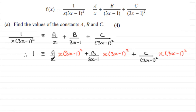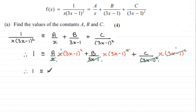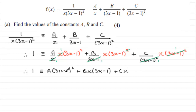Now we can cancel: the x cancels with the x, we cancel (3x minus 1) with one of the (3x minus 1) factors, and (3x minus 1) squared goes into the (3x minus 1) squared. Tidying this up, we have 1 is identical to — note the identity sign, not equals, since this is an identity — a multiplied by (3x minus 1) all squared, plus b times x times (3x minus 1), plus c times x.